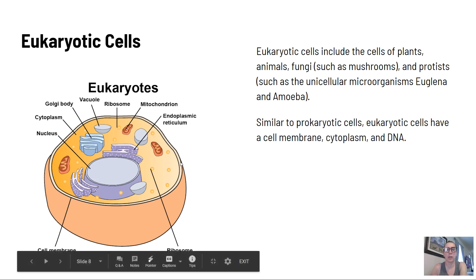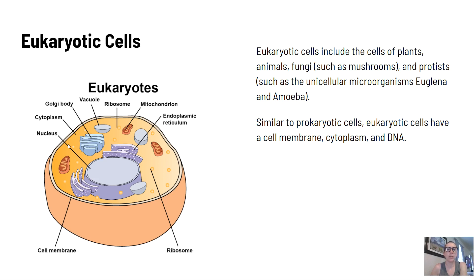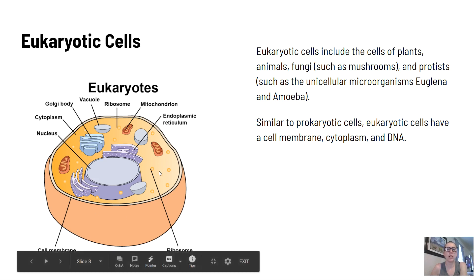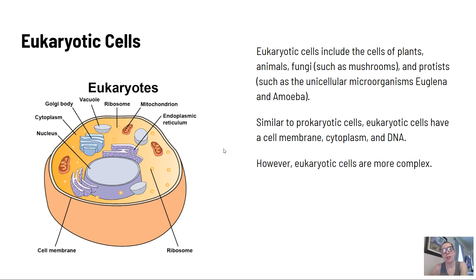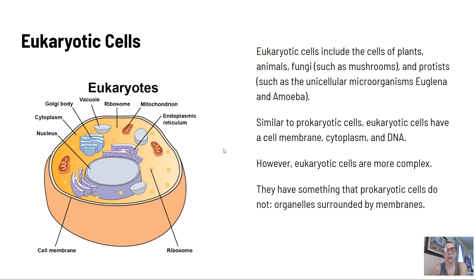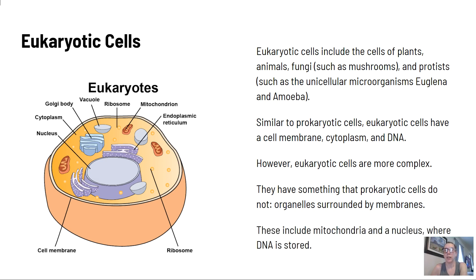Eukaryotic cells have a nucleus, as well as a cell membrane, cytoplasm, and DNA — the DNA is found in the nucleus. They are more complex and they have something that prokaryotic cells do not have, which is organelles surrounded by membranes. These include mitochondria and a nucleus where DNA is stored.